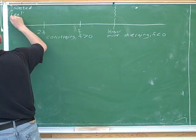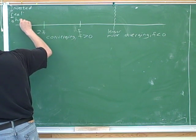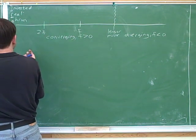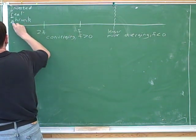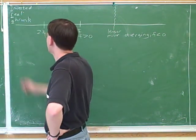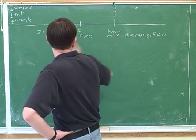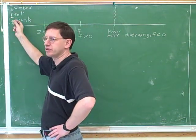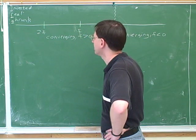Always inverted, real, and shrunk. If I put the object more than two focal points from the lens or mirror, we're always going to get an inverted, real, and shrunk image. We have that in our diagram.